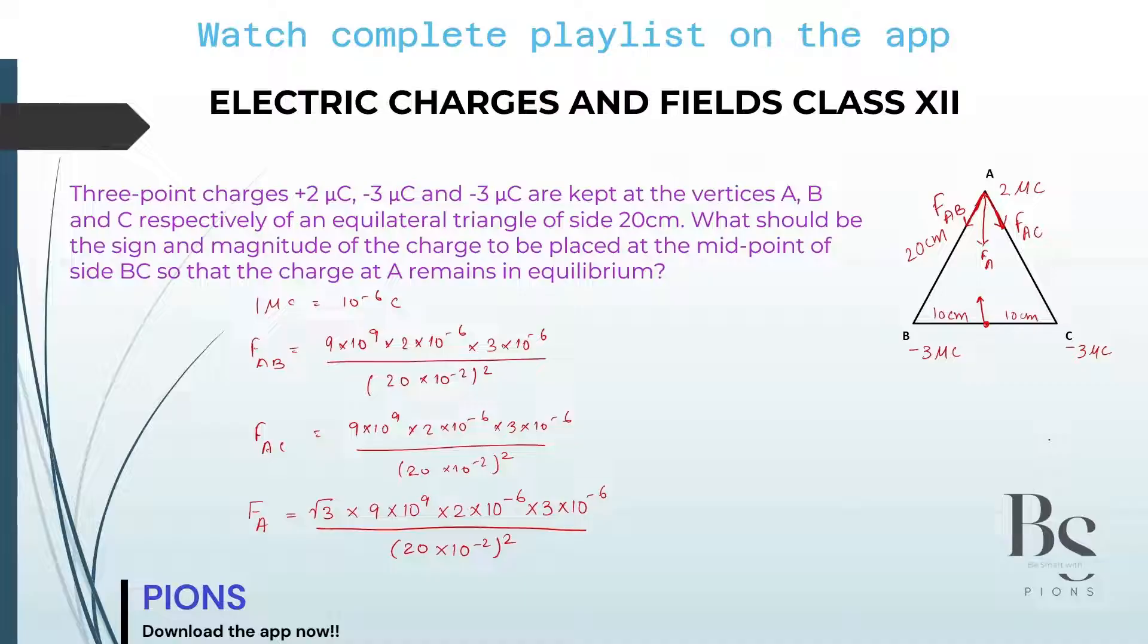This is our net force acting on A. Now if you are placing a charge on midpoint of B and C, this charge should apply a force in the opposite direction. Which means in this direction. Then only the resultant will be 0. Then only A will remain in equilibrium. So to apply that force, if this is the net force, this is our plus 2 microcoulomb, this opposite force should be repulsive. At this point, it should be pointing in this direction. So the charge on D should be positive charge. If you are placing a positive charge, then only it will throw it in this direction. So our charge on D must be positive.